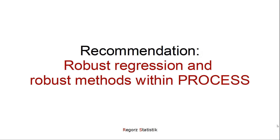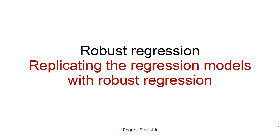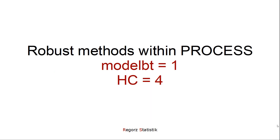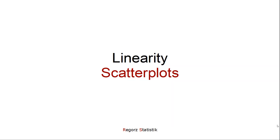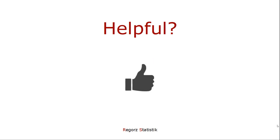Now for my recommendation on how I deal with these assumptions when running a PROCESS model. Nowadays I run a robust regression and in addition I use robust methods within PROCESS. For robust regression, I replicate the regression models with robust regression and check whether I get more or less the same results. For robust methods, I request bootstrapping and I request a robust standard error. And in addition, to check for possible nonlinearity, I look at scatter plots. That's it for checking regression assumptions when running PROCESS for R. If you like this video, make sure to subscribe to my YouTube channel.